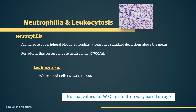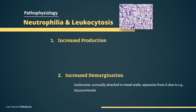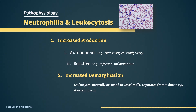It shall be noted that normal values for WBC in children vary based on age. Regarding pathophysiology, neutrophilia may be caused by either increased production or increased demargination of neutrophils. The increased production can be either autonomous or reactive.